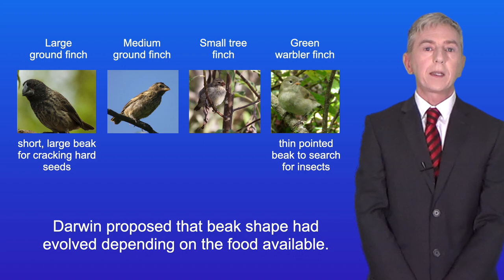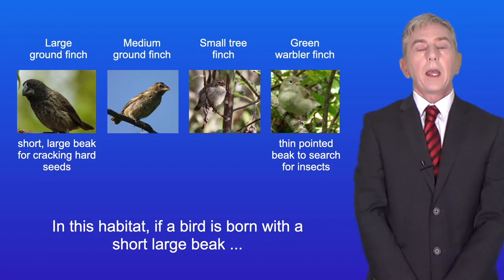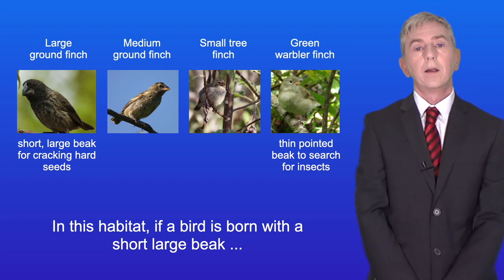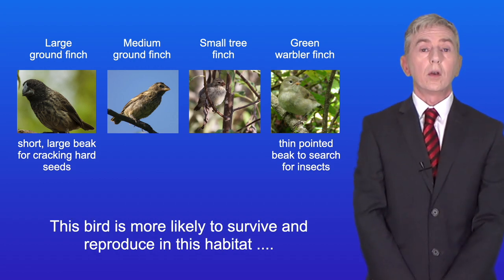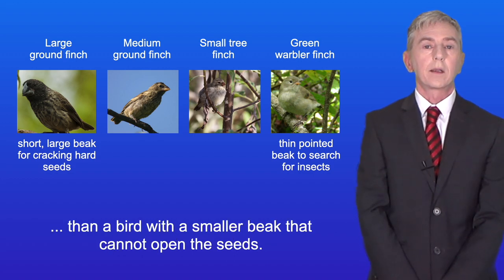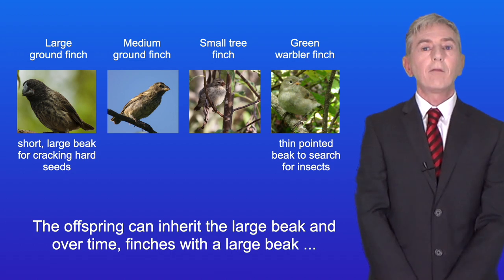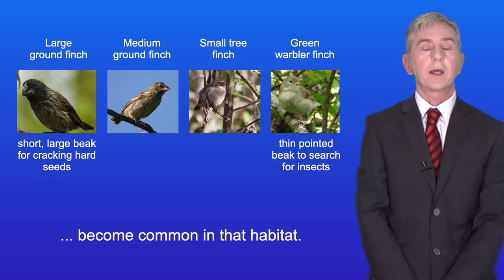Darwin proposed that beak shape had evolved depending on the food available. For example, consider the habitat where plants produce hard woody seeds. In this habitat, if a bird is born with a short large beak, it can use its beak to open the seeds for food. This bird is more likely to survive and reproduce in this habitat than a bird with a smaller beak that cannot open the seeds. The offspring can inherit the large beak and over time finches with a large beak become common in that habitat.